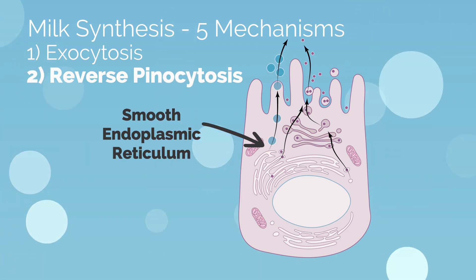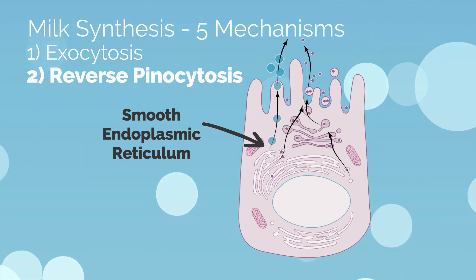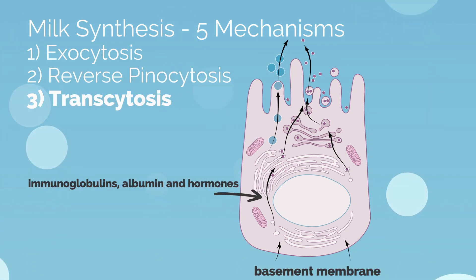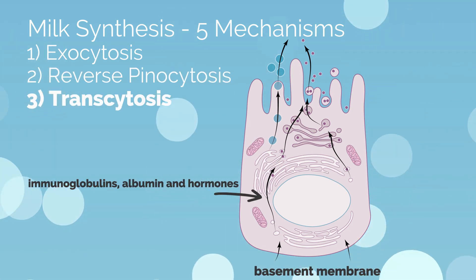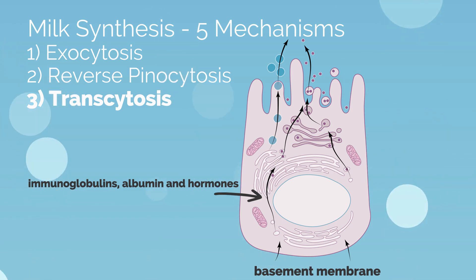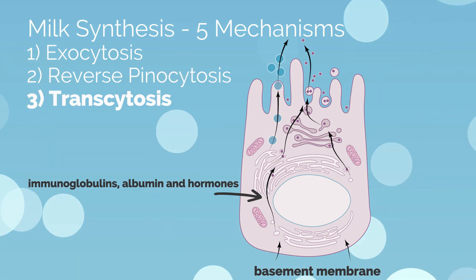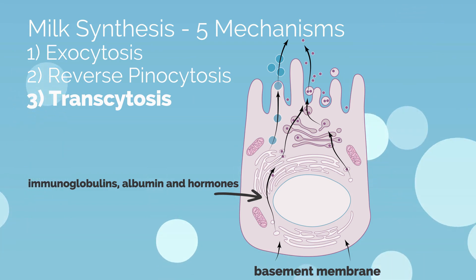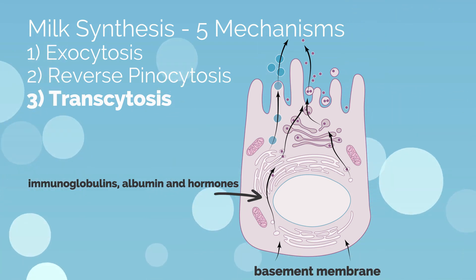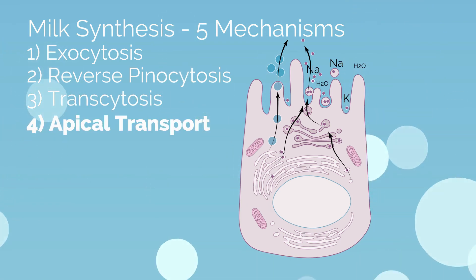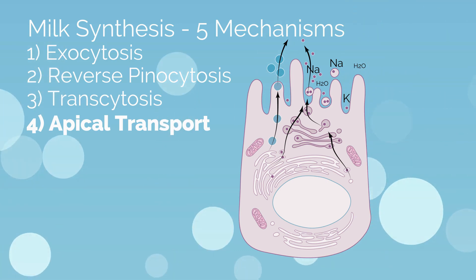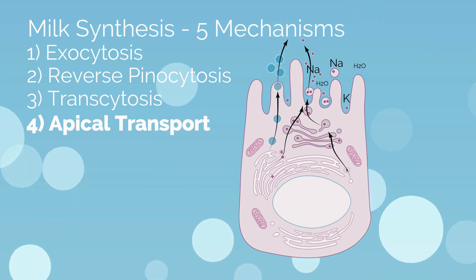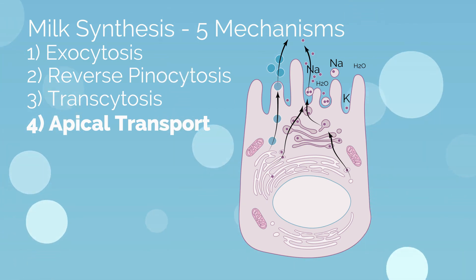Lipids formed in the smooth ER combine to form large droplets that get pushed out into the lumen. The third mechanism involves transcytosis. This mechanism allows immunoglobulins, albumin, and hormones to bind to the basement membrane of alveolar cells and get transported to the apical membrane where they are released. Apical transport, the fourth mechanism, allows small molecules such as sodium, potassium, and water to move into the lumen. The exact mechanism is not well understood.